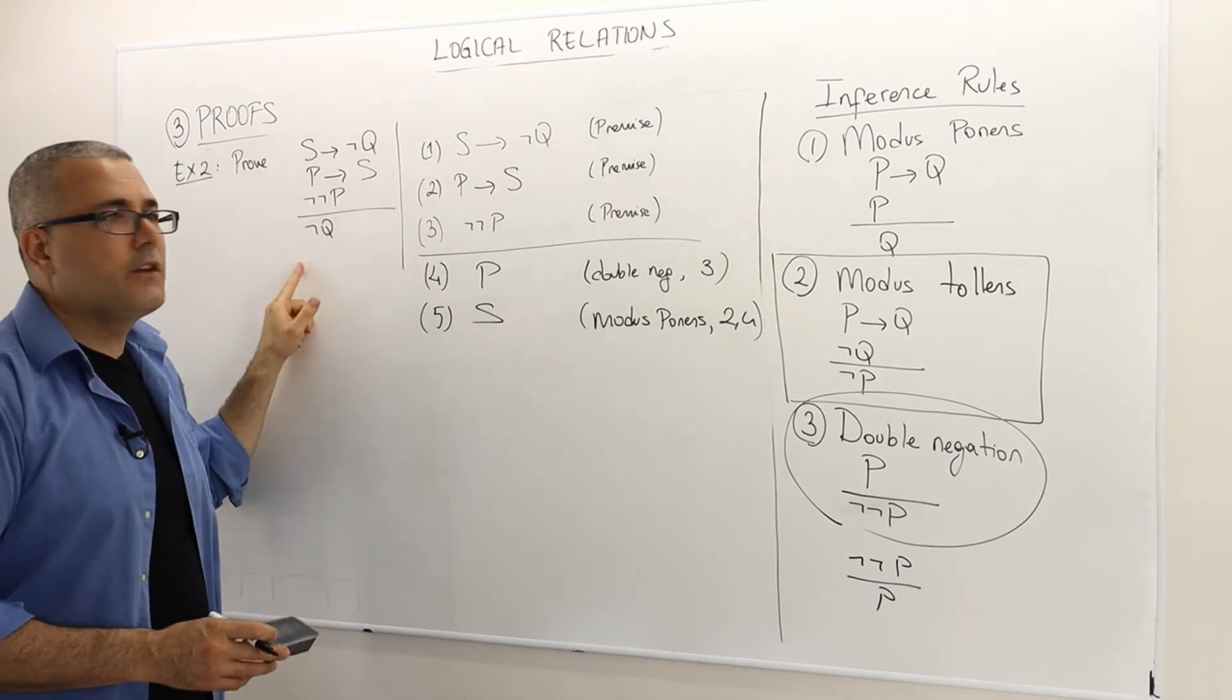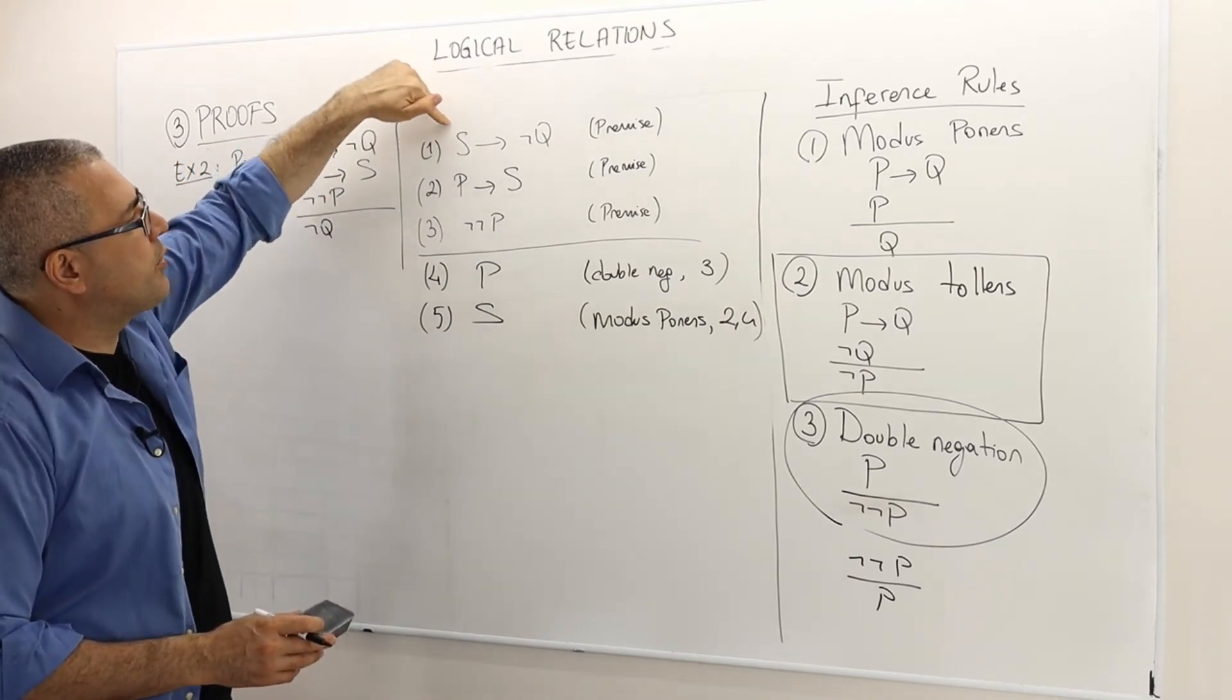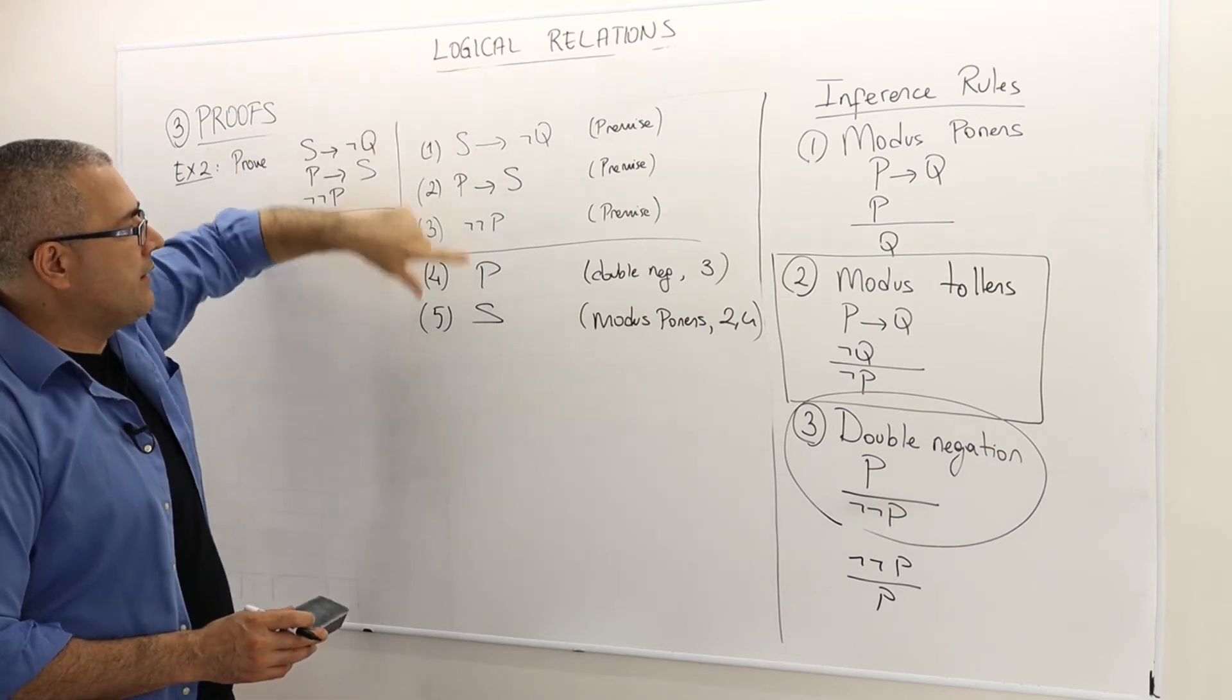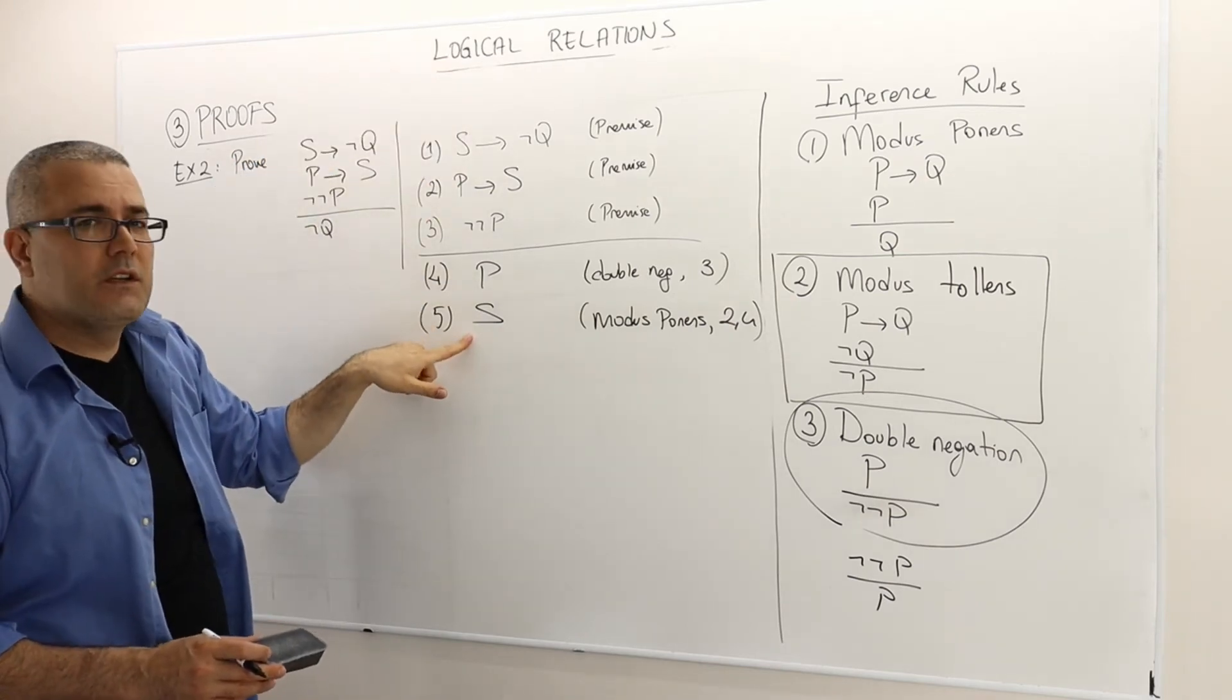Okay, what I want to get is not Q. How can I do that? Well, look at premise number 1, and then this conclusion 5.